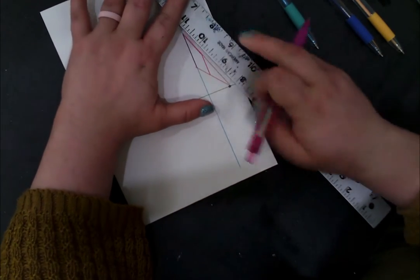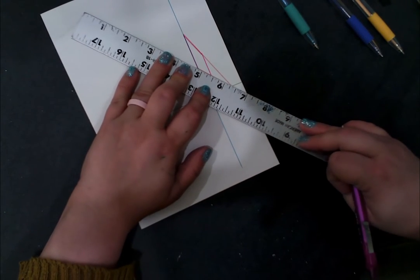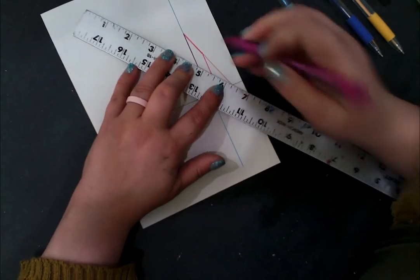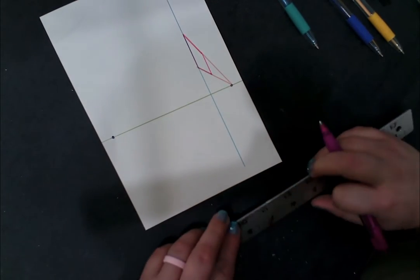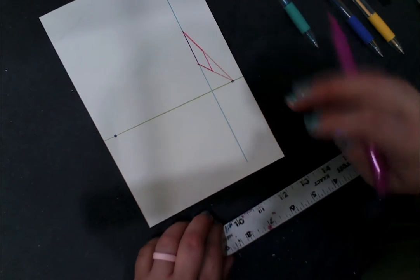The thing that makes two-point perspective different than one-point perspective, other than the fact that you have two vanishing points, is that you get to see more of the shape. So we have the right side of our rectangular prism.